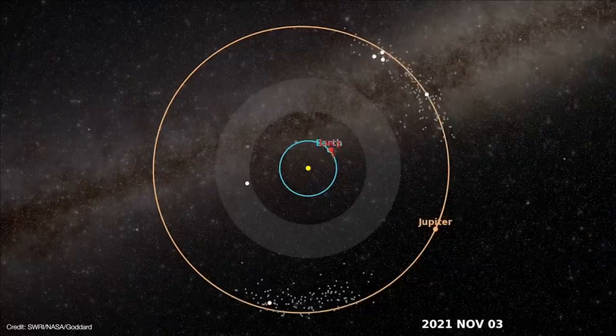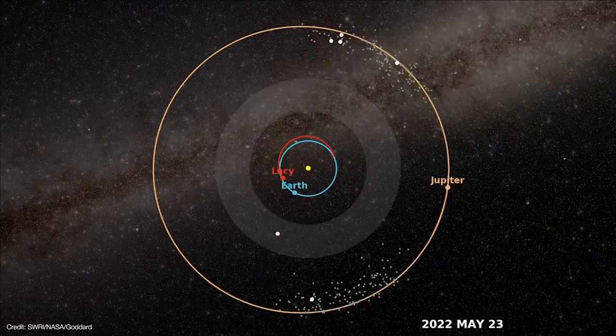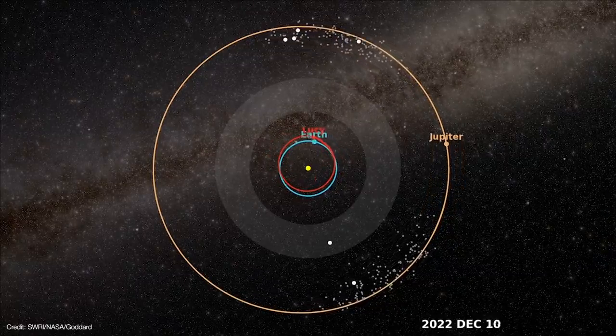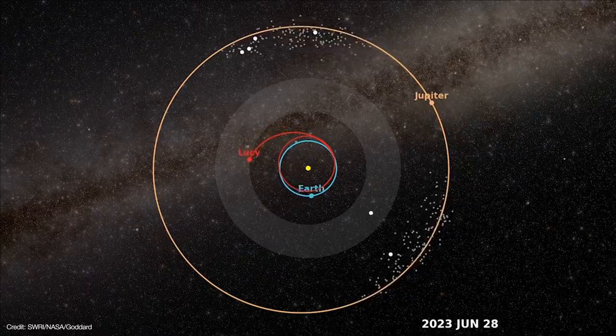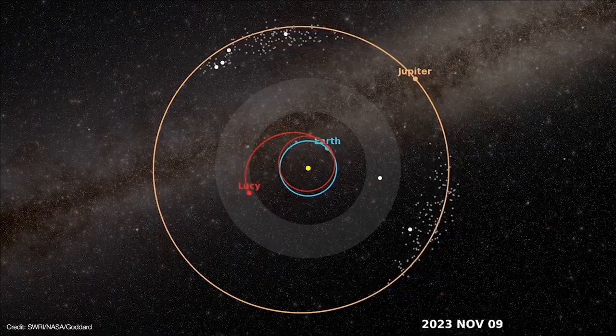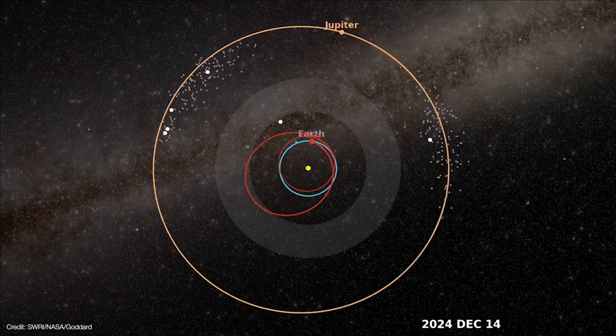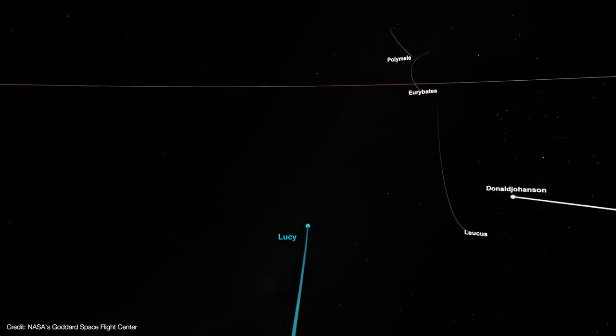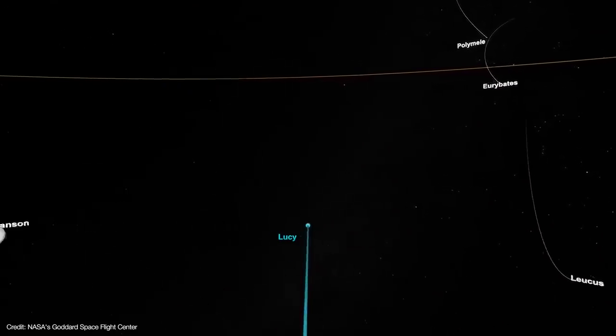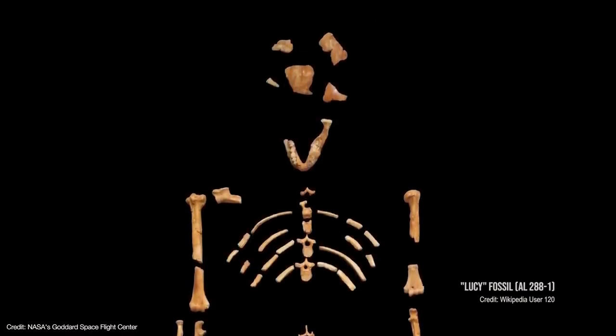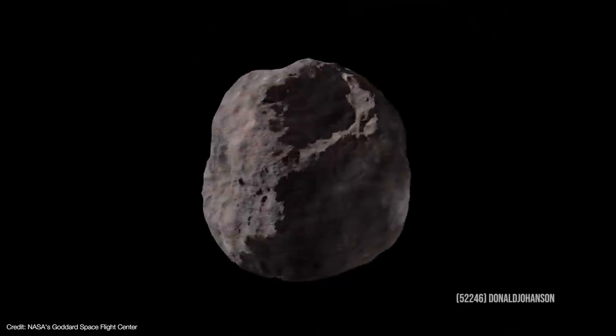And that's why Lucy will visit several different Trojans and compare them to each other. But to reach the Trojans, Lucy must embark on the craziest trajectory of any spacecraft in history. Lucy launched on October 16 into an orbit that more or less follows Earth's. A year from now, it will approach Earth to get a gravity assist, followed by a second one in December 2024. These maneuvers will propel Lucy toward Jupiter's orbit. Along the way, Lucy will pass by the main belt asteroid Donald Johansson in April 2025. This asteroid is fittingly named after the anthropologist who discovered the Lucy fossil in 1974. This initial flyby will serve as a kind of dress rehearsal for the Trojan encounters.